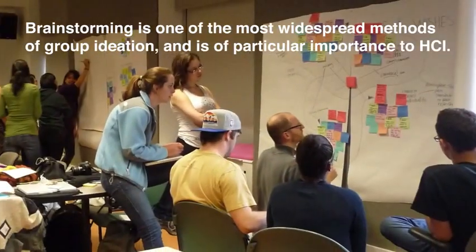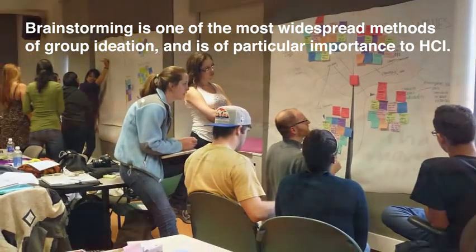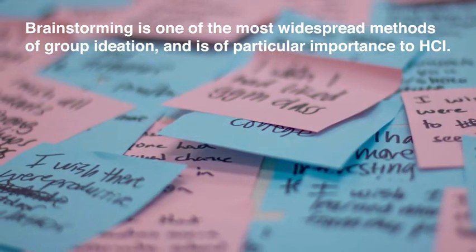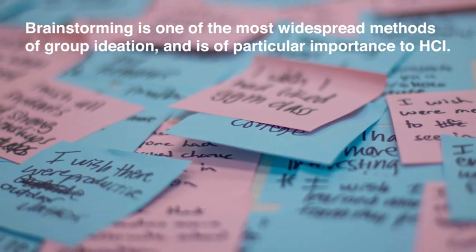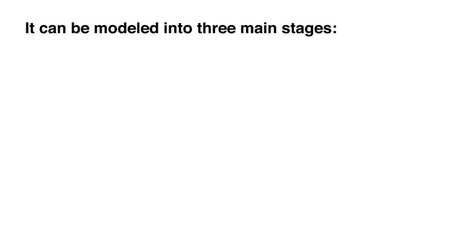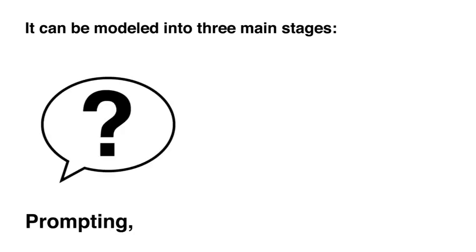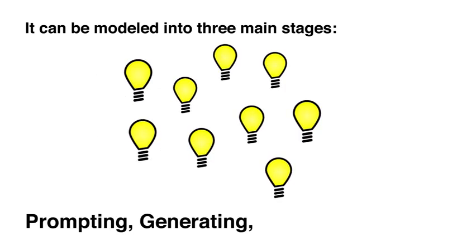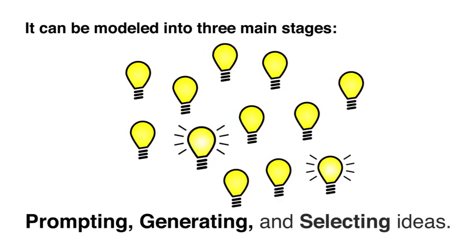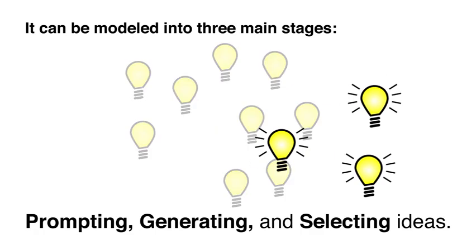Brainstorming is one of the most widespread methods of group ideation and is of particular importance to HCI. It can be modeled into three main stages: prompting, generating, and selecting ideas.